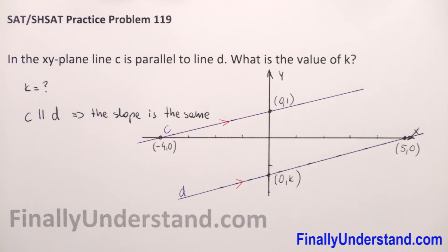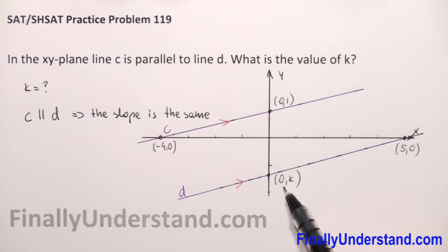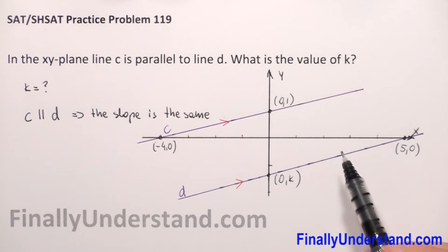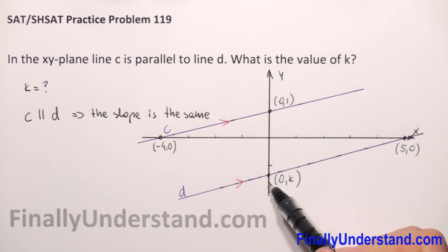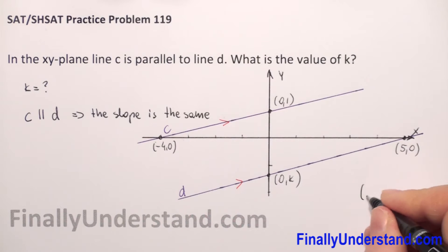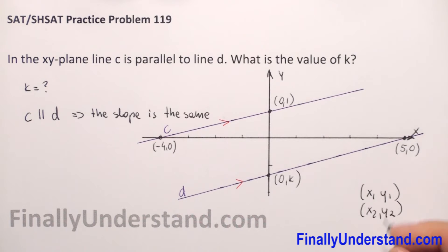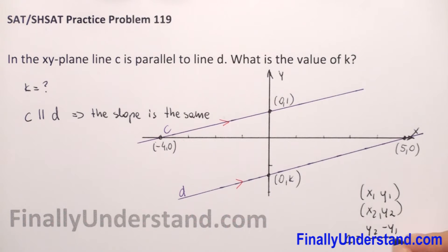If we have given two points on each line, we can find the slope of line C and slope of line D. Let me remind you the formula: when you have given two points x1, y1 and x2, y2, the slope is y2 minus y1 over x2 minus x1.